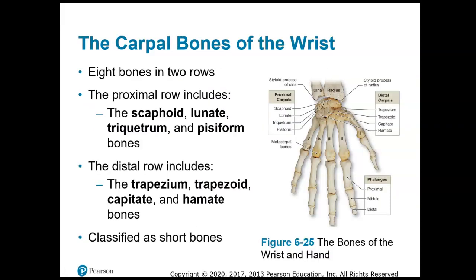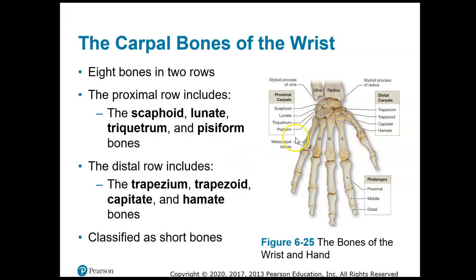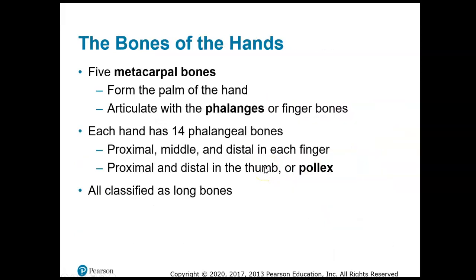The carpals are the bones of the wrist — you don't have to know the names of the individual carpals. You can see the radius alongside the thumb and the ulna alongside the pinky. The bones of the palm are the metacarpals, and the finger bones are called the phalanges.